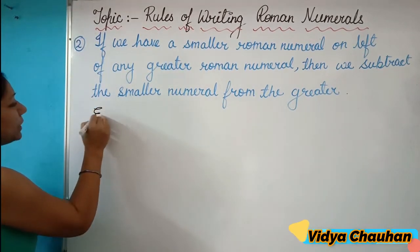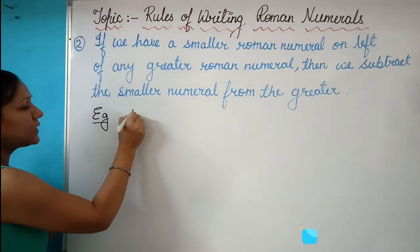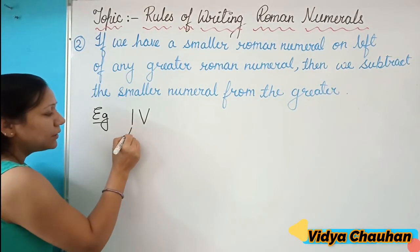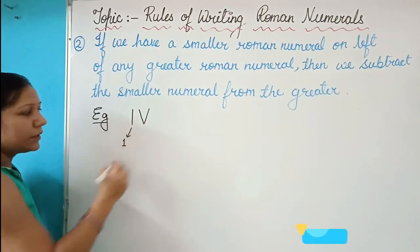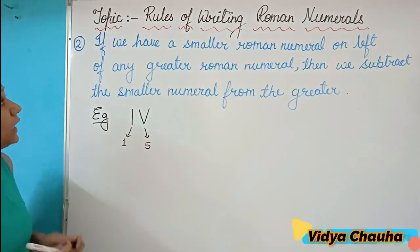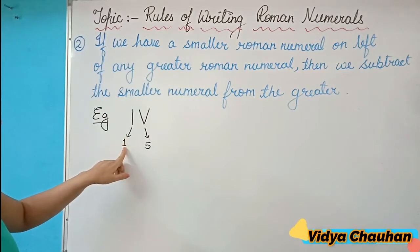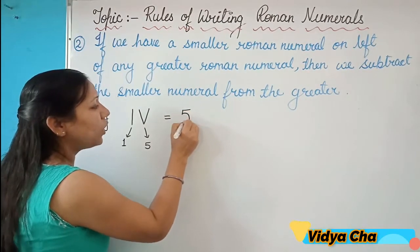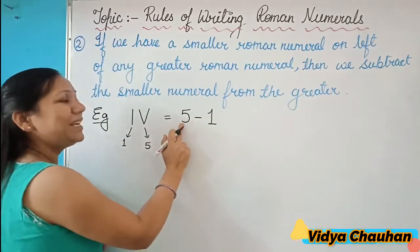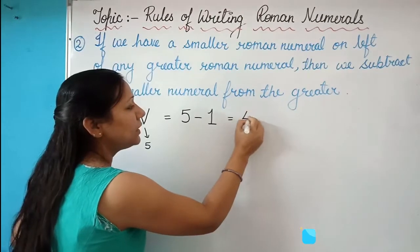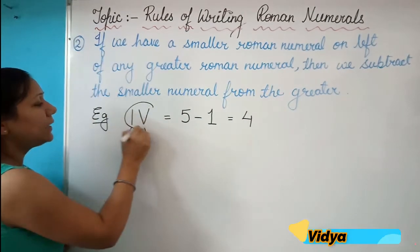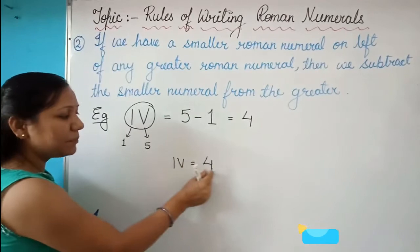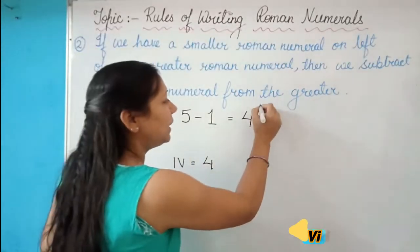To explain this, let me take an example. Suppose it is written IV. Here I represents digit 1 and V represents 5. Since there is a smaller numeral on the left of the bigger numeral, we subtract: 5 minus 1, and the result is 4. So the symbol IV represents the digit 4 in Hindu-Arabic.